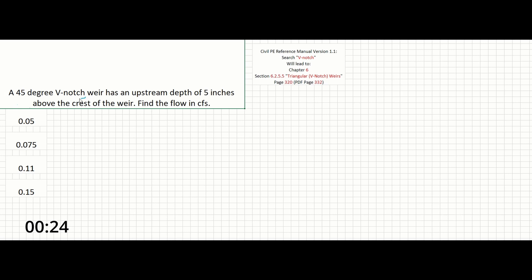The first thing I would do is look up V-notch weirs and if we do that in the reference manual you'll see that it does take you to an equation on page 320 given as follows. So Q equals 8 over 15 Cd times the square root of 2g times tangent of theta over 2 times the height raised to the 5 over 2.